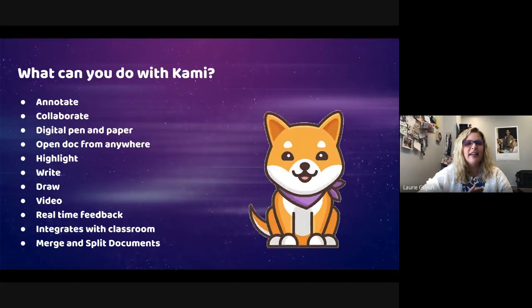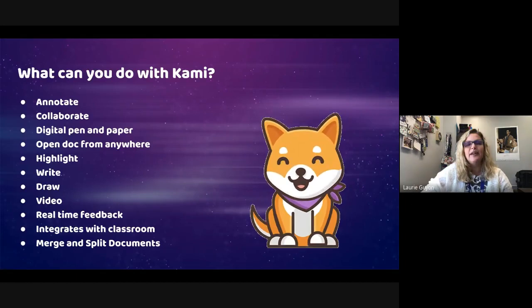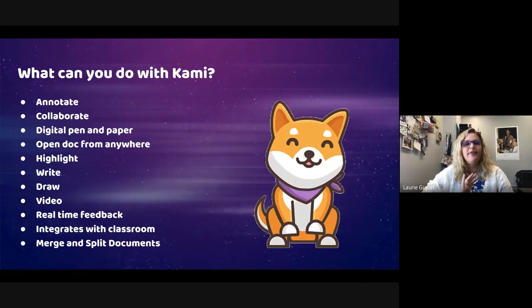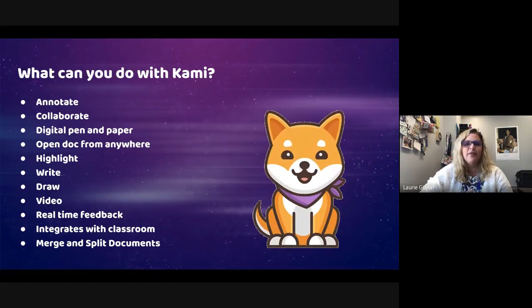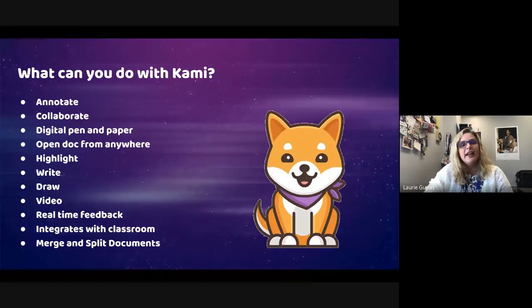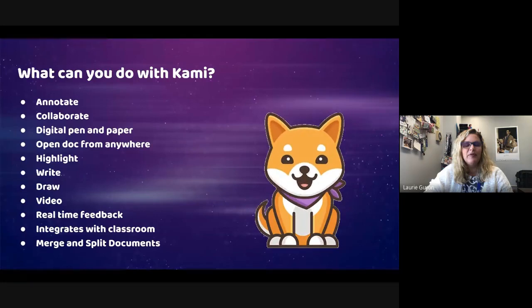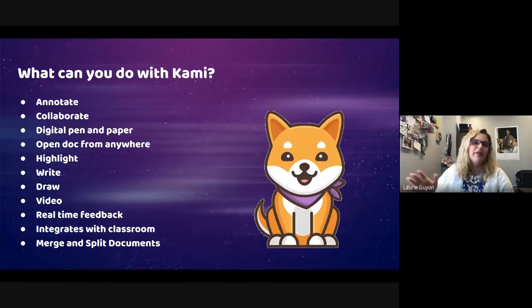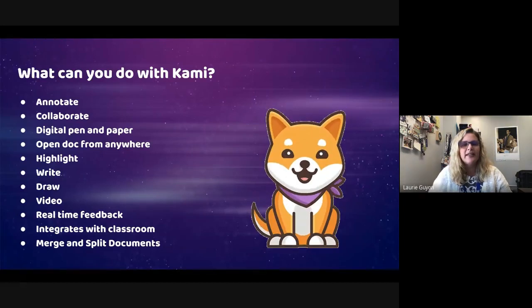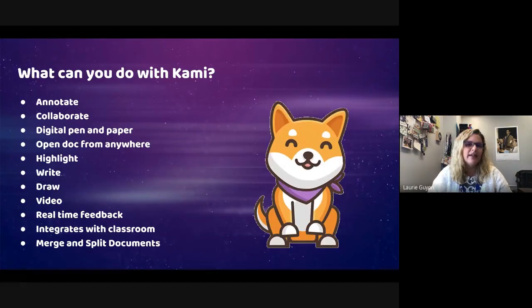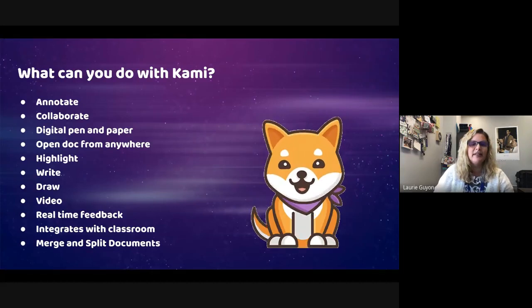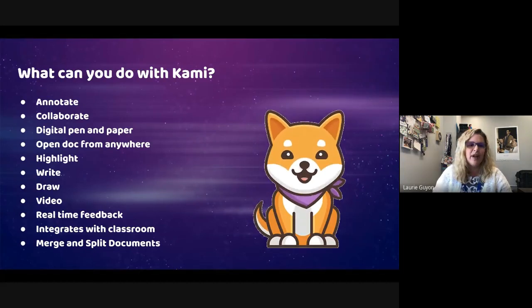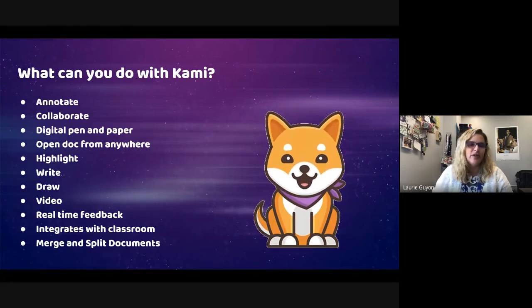Kami allows you to annotate on anything — any PDF, any document, any worksheet you'd typically do. You can take a photo of it, scan it in, whatever you normally do to make it digital, and then write on it. When I need to sign something, like a form where I need to put a signature, I use Kami because it lets me write right over a PDF and send it in. It lets me fill in boxes on a sheet. Think of it as your digital pen and paper — it does allow you to pull from anywhere, including right from your Google Drive.